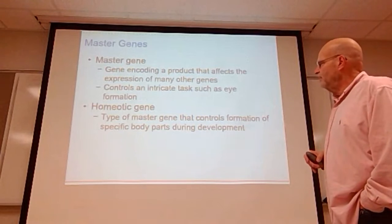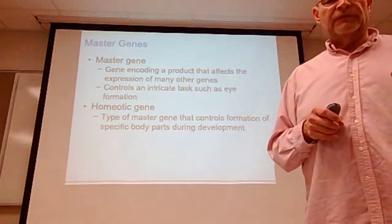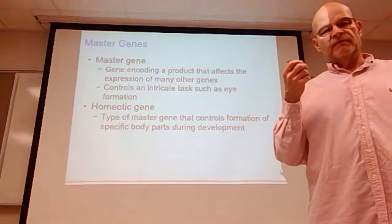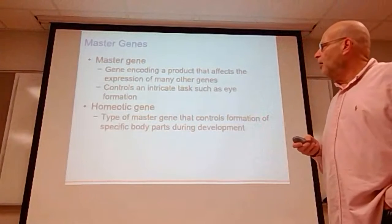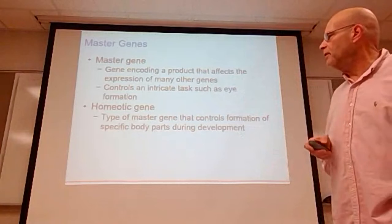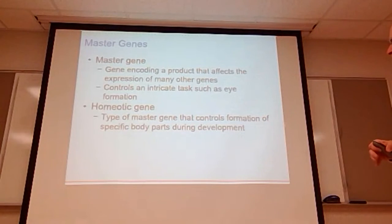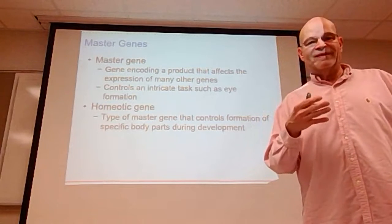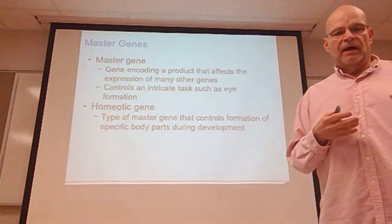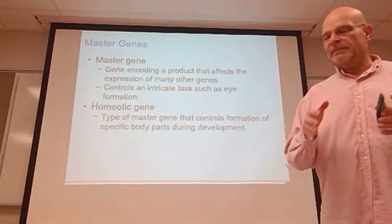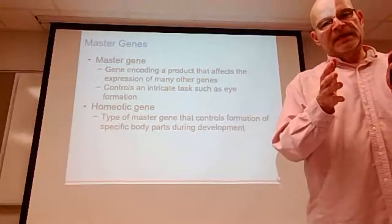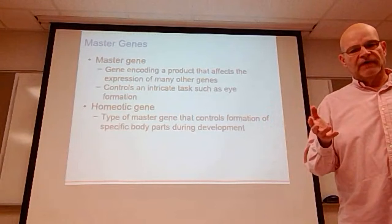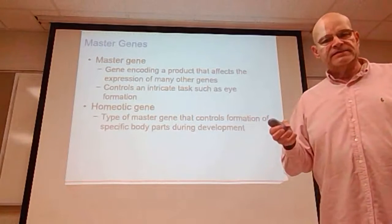Multiple genes control eye formation — some form the shape of the eye, some form the fluids, some form the colors — but there is a master gene that controls all of them. A homeotic gene is a type of master gene that controls the formation of specific body parts during development. For example, finger formation starts at a particular time controlled by a homeotic gene; if that gene does not become active at the right time during gestation, fingers will never form.